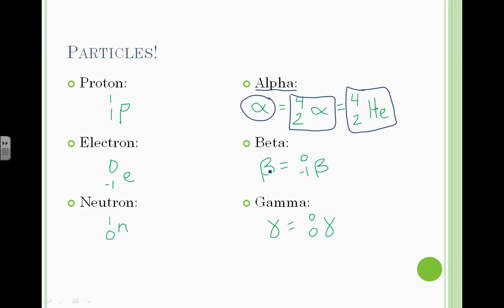We have a beta particle which is essentially the same thing as the electron. If you look at its mass and charge, it's the same thing as the electron. And the gamma ray is just a high energy ray. It has no mass and no protons. It's just pure energy.